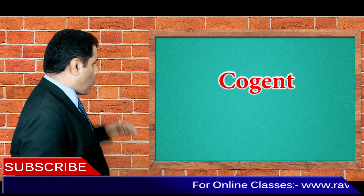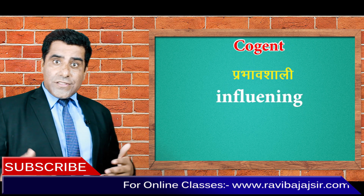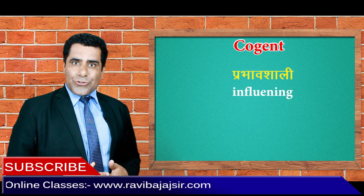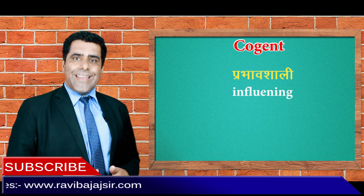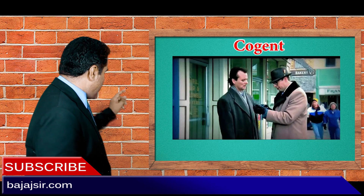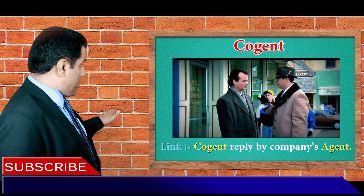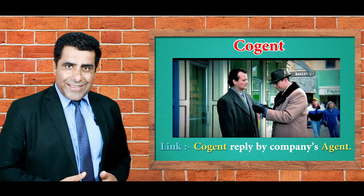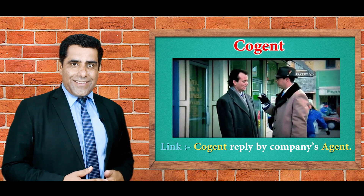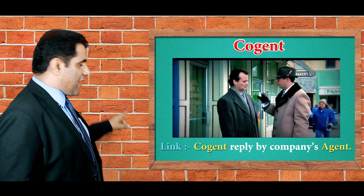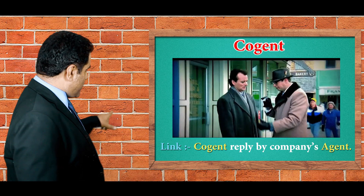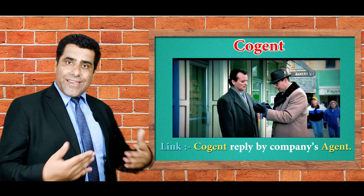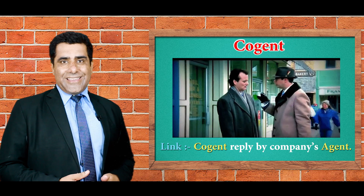Our next word is Cogent — meaning convincing, prabhavshali. Cogent reply ho sakta hai. And the link word is 'company agents' — company agents ko cogent aate hain, cogent reply karne aate hain. Company agents hamara link word hai, underline karenge. Cogent main word hai. Company agents ko prabhavshali replies aate hain.